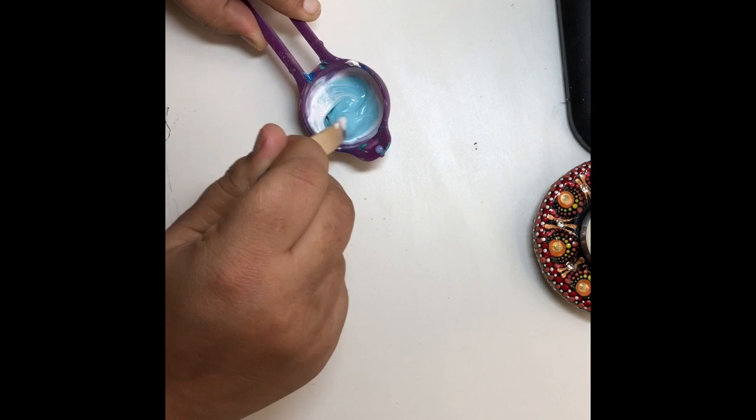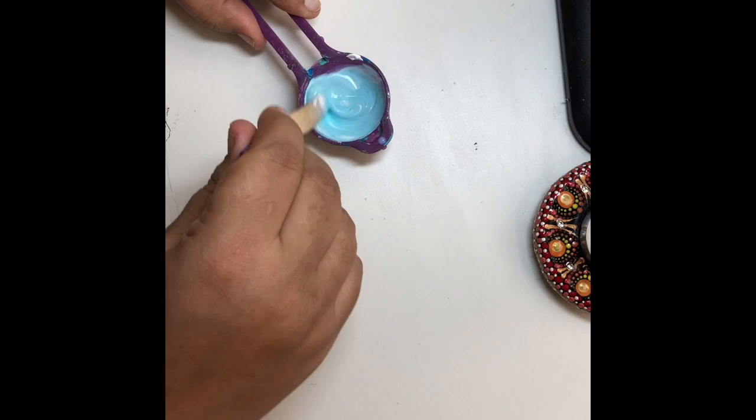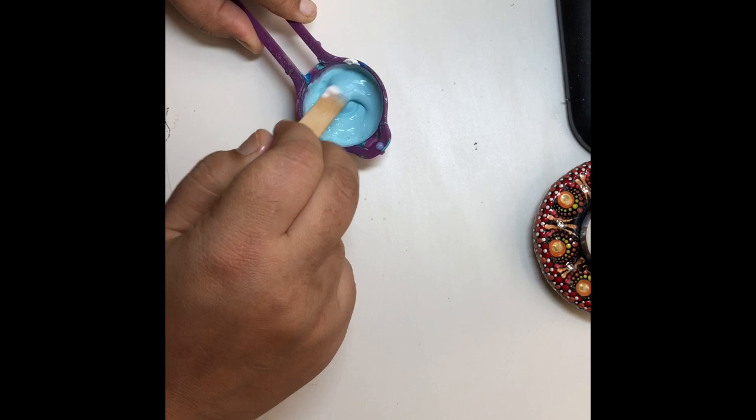Now mix this paint thoroughly. You can add a little bit of water also. I use this spray water bottle - it is very convenient for mixing the paint. Your color should get soft peaks when you lift it. That's how you know that your color is in the right consistency and ready to be filled in the tubes.